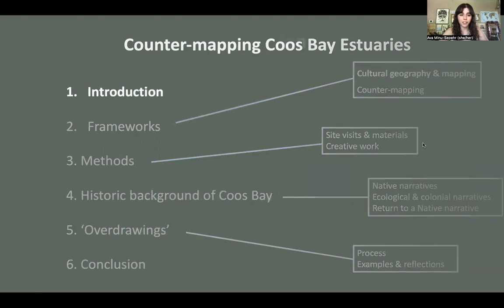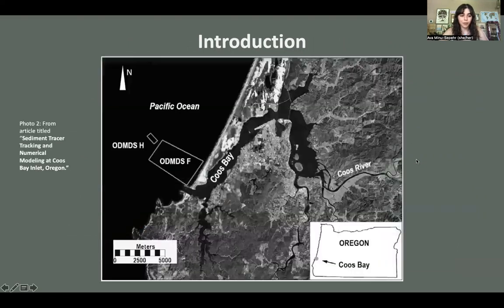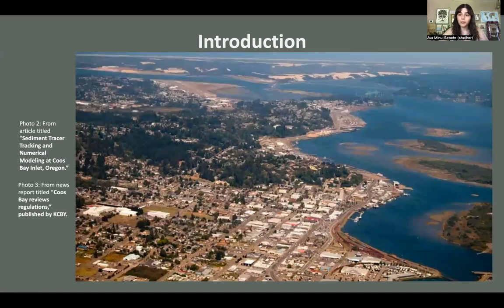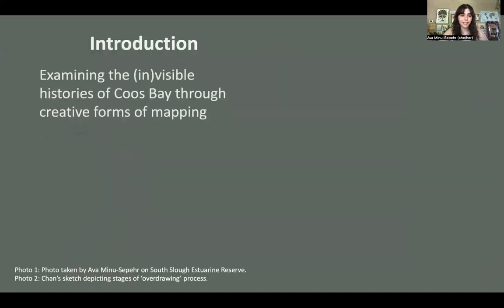I'll start with the introduction to situate us about where Coos Bay is located. It's on the southwest Oregon coast. Here's a zoomed-in map — Coos Bay is kind of an upside-down view. It's a beautiful area but has a really violent colonial history, and that's the source of my topic for this thesis research.